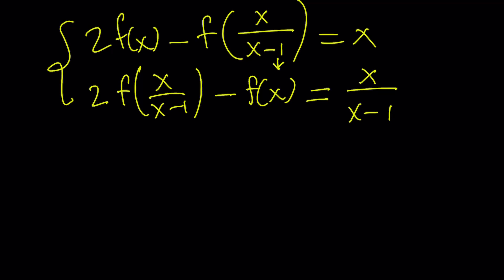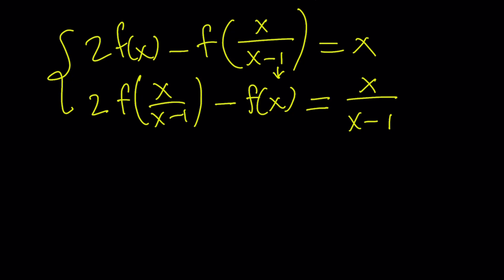So now, how do we solve this system? Remember, our goal is to find an expression for f of x. That would make sense if I can get rid of this expression right here. Notice that the coefficient of f of x over x minus 1 is 2 in the bottom equation, and in the top equation its coefficient is negative 1. So that tells me to multiply the top equation by 2.